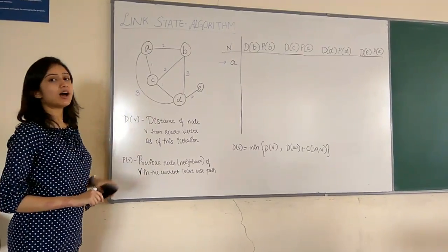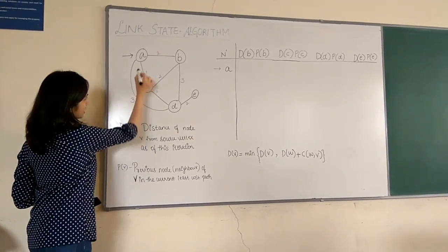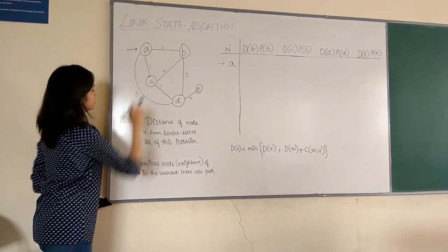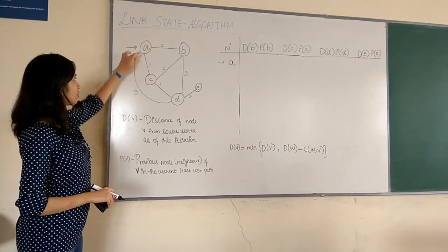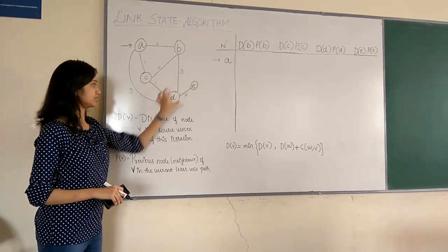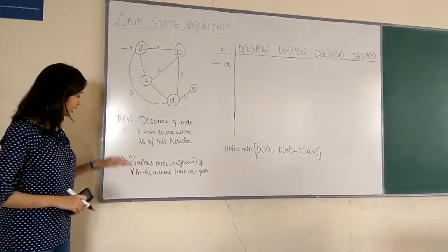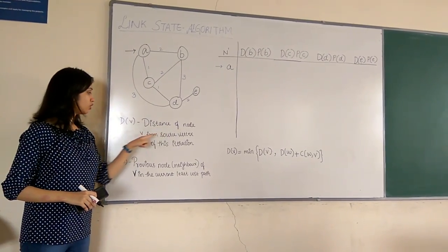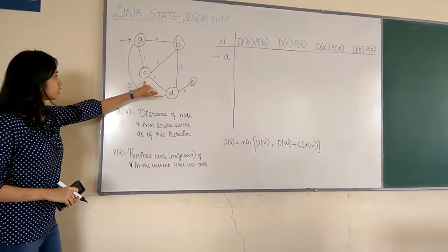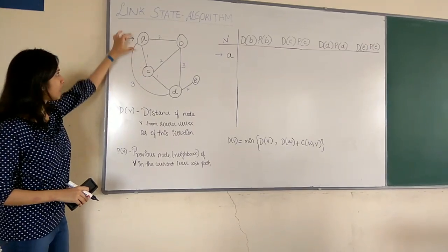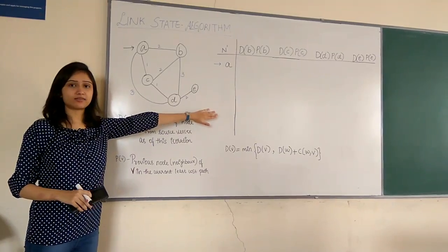Take an example of this graph. Say the source node is A, and these are the routers connected by links with the cost written in blue. What we find out using Link State is the least cost path from the source node to each of the other vertices in the graph. Before we start solving, we have to know a few terminologies: D(V) and P(V). D(V) is the distance of node V from the source node as of this iteration. Say D(C) would be the distance of node C from node A as of this iteration, and what we mean by 'this iteration' will be understood once I start filling the table.